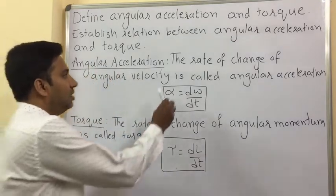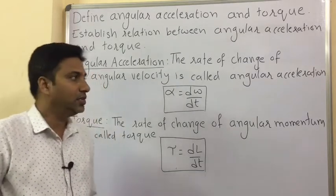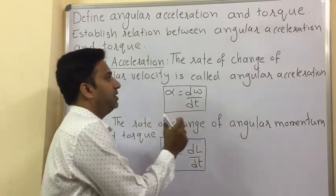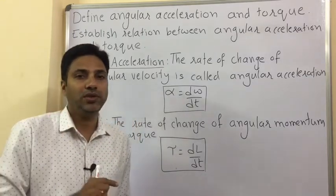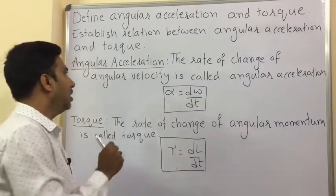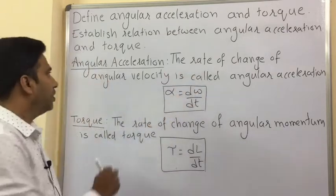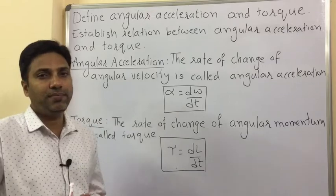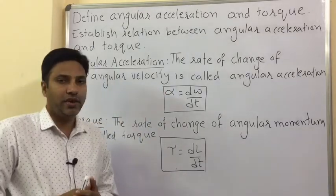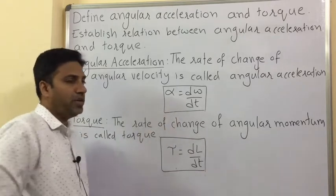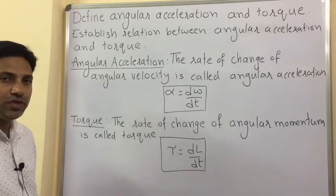The rate of change of angular velocity is called angular acceleration. When the object is in circular motion, the rate at which angular velocity changes with respect to time is called angular acceleration. The formula is alpha equals d-omega by dt.